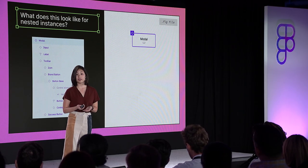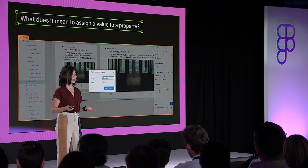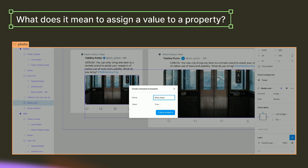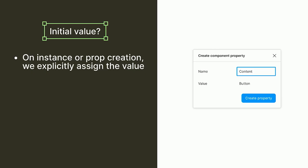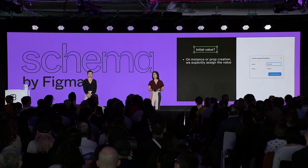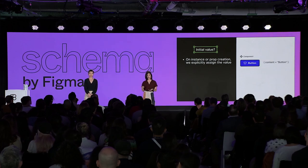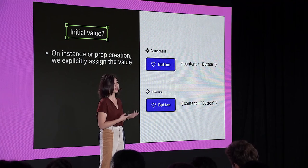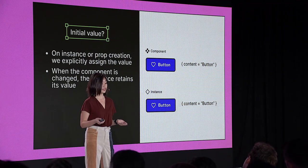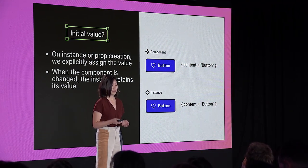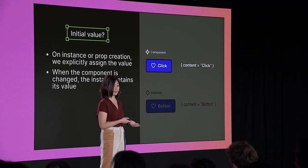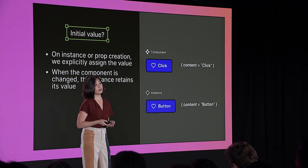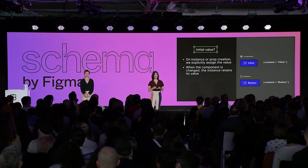So how does this relate to building props? One of the questions we asked ourselves was: what does it mean to assign a value to a property? One possible meaning is an initial value — when you create the instance or create a new property, we explicitly assign the value. For example, with a button component where we've assigned content equals 'button', when we create an instance, it explicitly assigns that content property. This means when the main component is changed, the instance retains its original value.